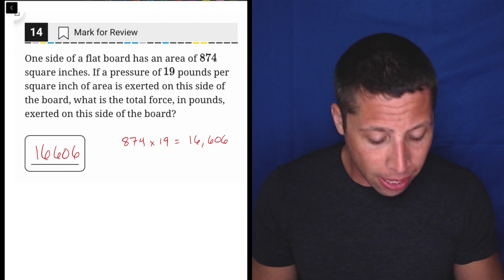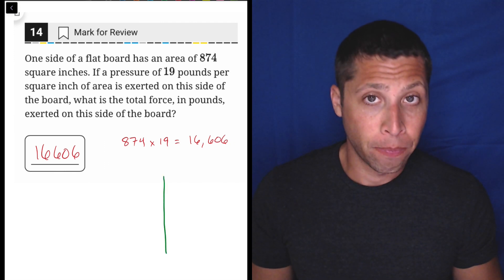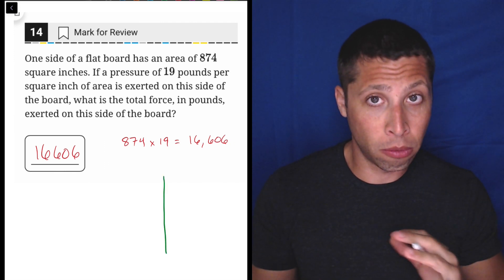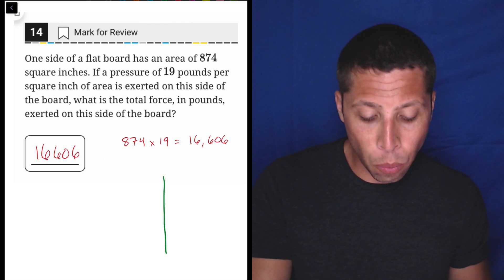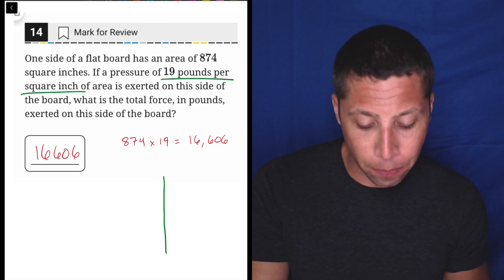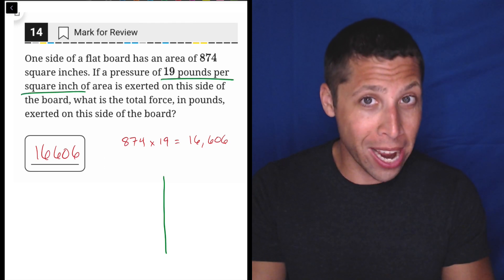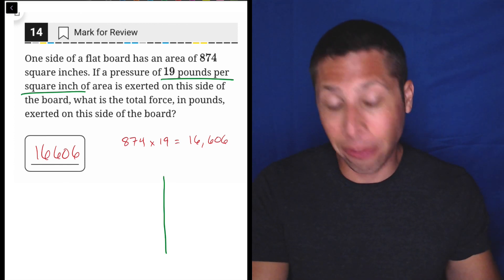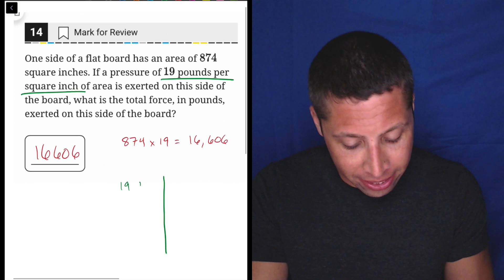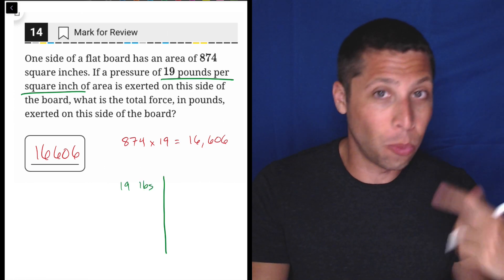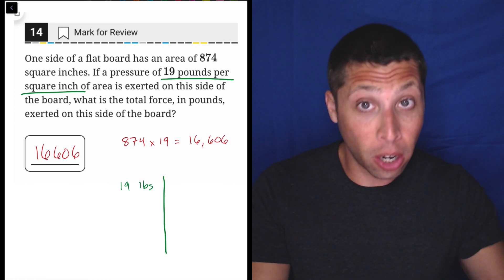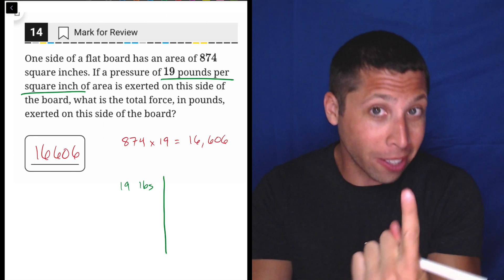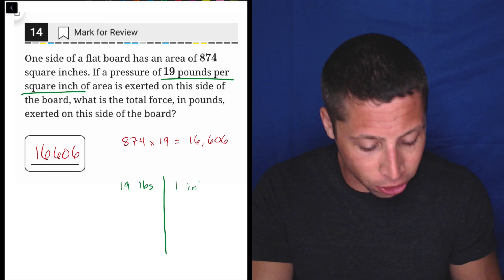So my way of dealing with that is make a chart and list your rates. So I have a rate right here. Now, normally when we have a rate, it has two numbers. And so this is only one, but not really because 19 pounds is one of our numbers per square inch, per one square inch. So one inch squared.